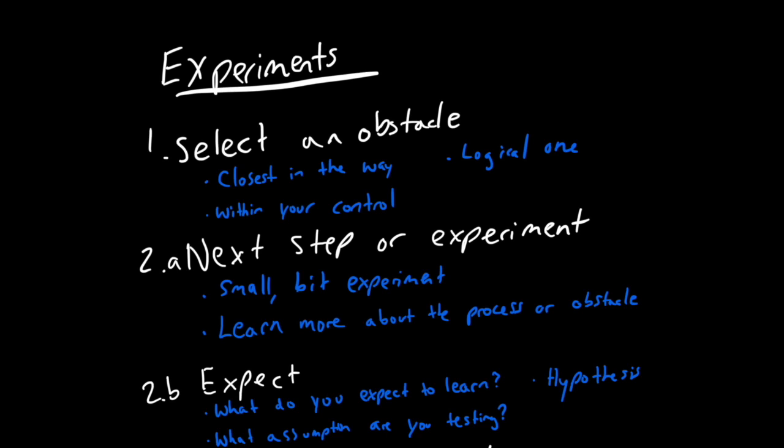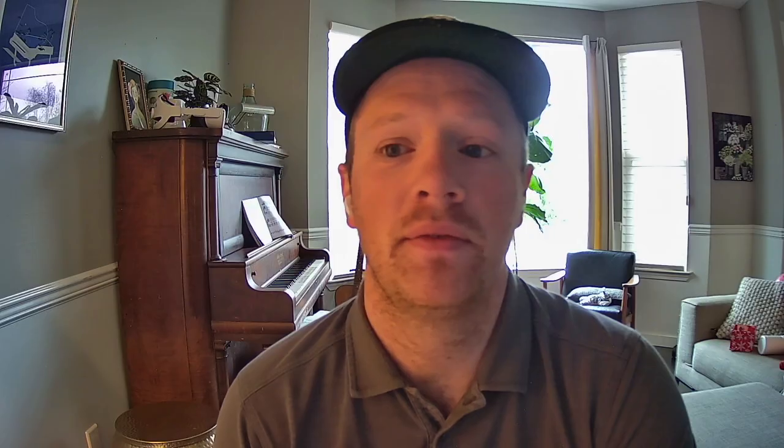And then I often say choose the logical one - what makes sense? For example, one of my learners was trying to communicate a vision to his team, but the obstacle of not feeling confident in the communication is probably after the obstacle that he doesn't have a vision to share. So there's a logical progression with a lot of these obstacles.